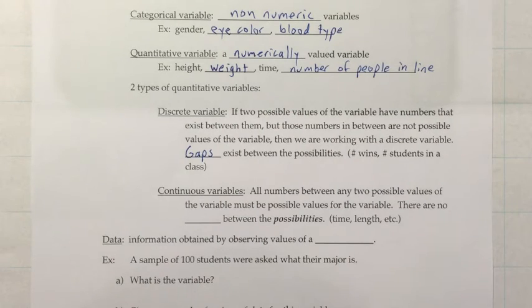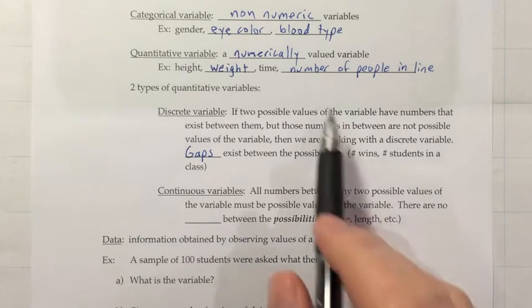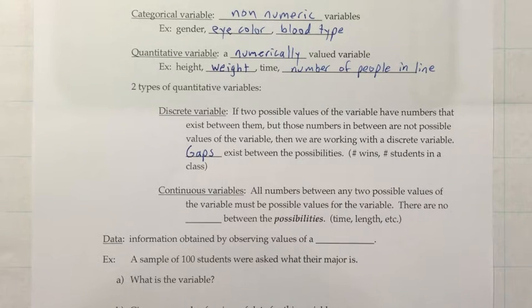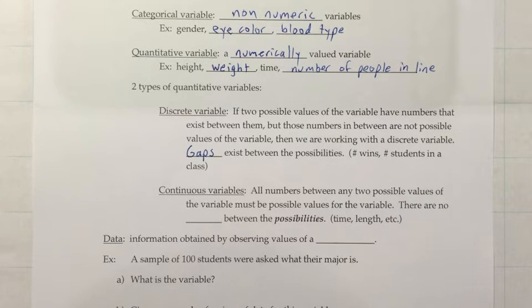So, number of wins is like that. Number of students in a class is like that. Number of people in a line that I mentioned up above was like that. A continuous variable would be one where those gaps in between are filled in with possibilities.